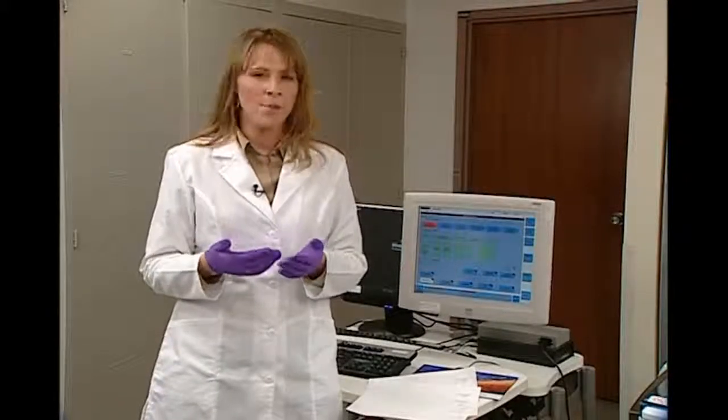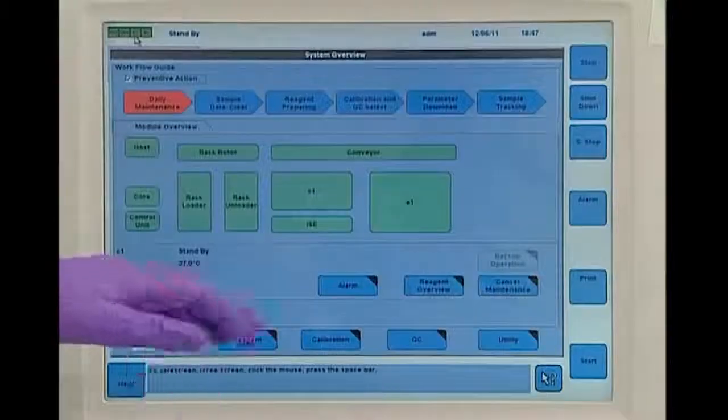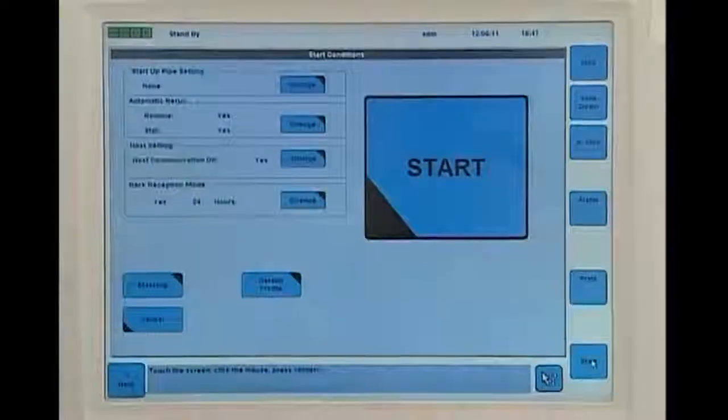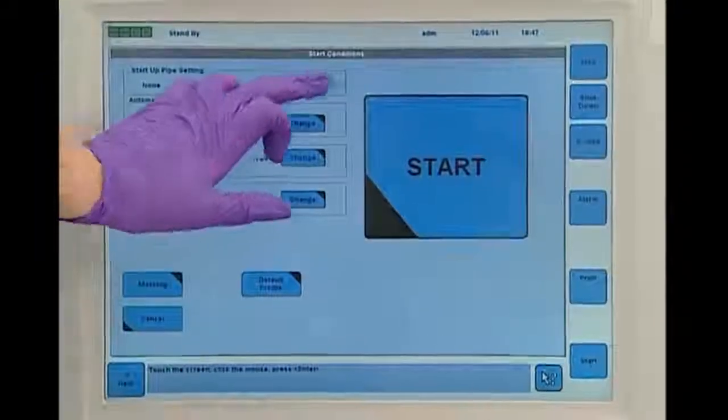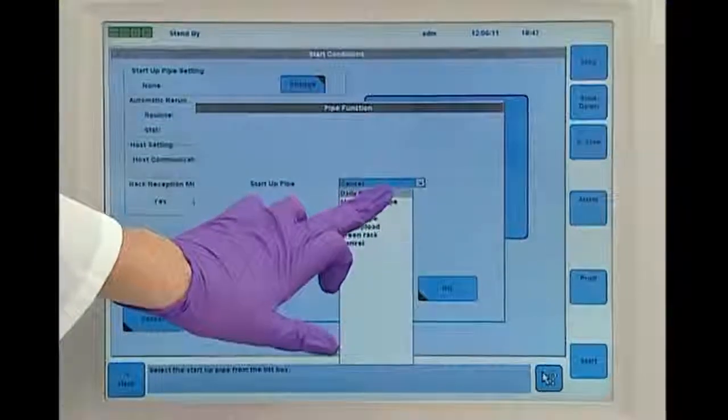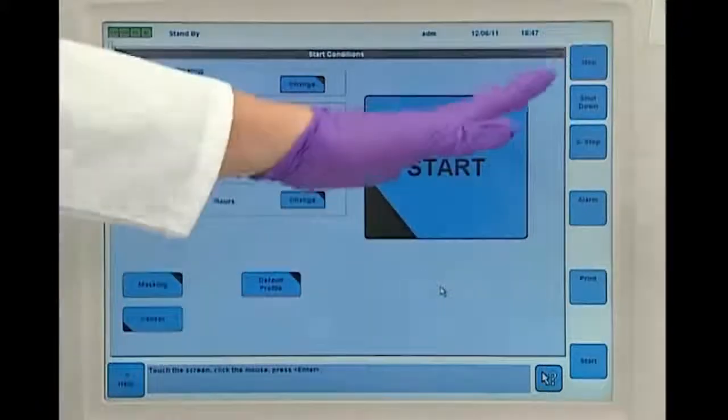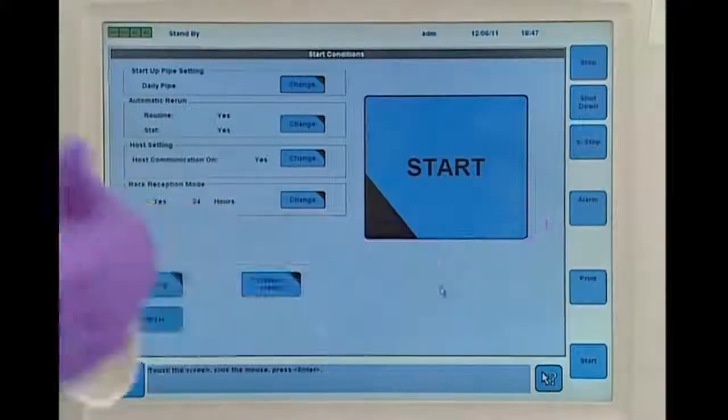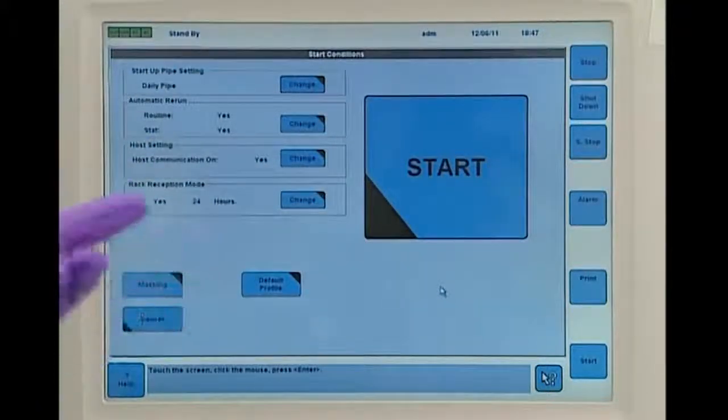Those items might include photometer check, incubation bath exchange, and an air purge. The daily pipe is very easy to access. We're just going to go to the start condition screen, and we're going to select the daily pipe and say OK, and then hit the start button. The daily pipe will immediately start processing, and I can now go to load the cal set controls.